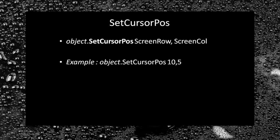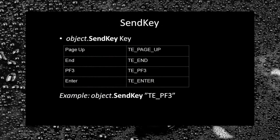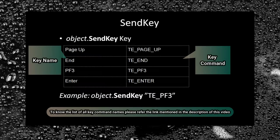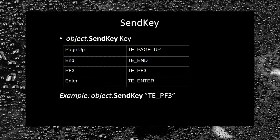To unfreeze the screen you have to press the Escape key. The SetCursorPosition method is used to set the cursor at the desired row and column — in the example, I am setting the cursor to row 10 and column 5. The SendKey method is used to simulate key press operations like Page Up, Page Down, Escape, End, Space Bar, Enter, and function keys like F1, F2, F3, etc. In the example, I am pressing F3, which is usually used to exit from a mainframe screen.